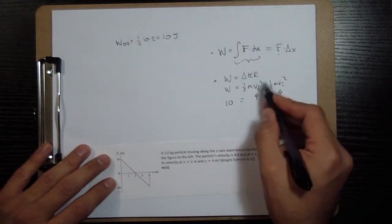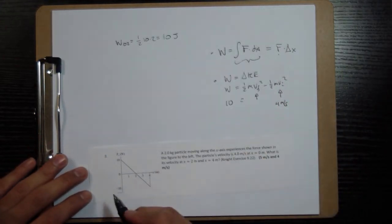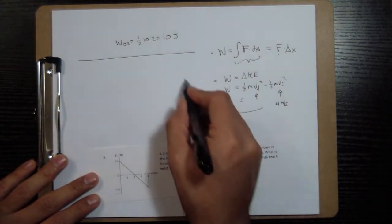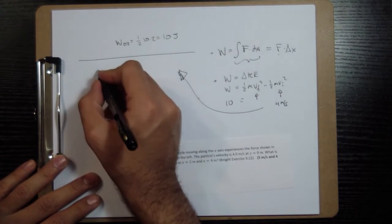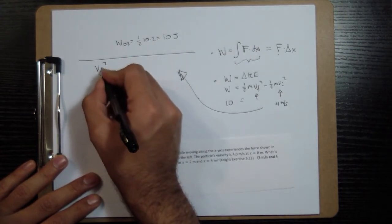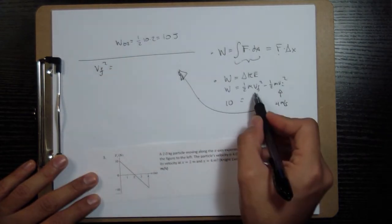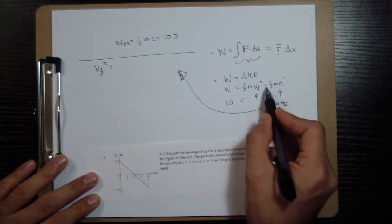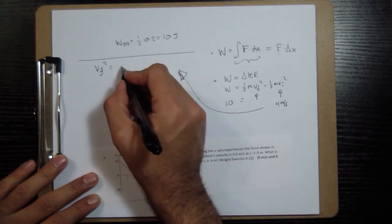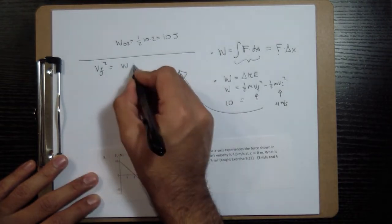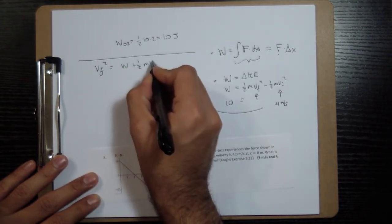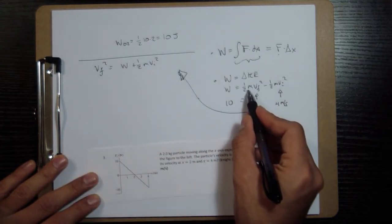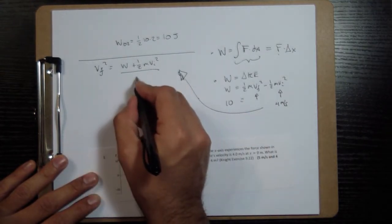So then what we'll do is isolate v final. I'm going to write this over here. V final squared I'm going to move this to the other side so it's going to be work plus 1 half m v initial squared and then I would have to multiply by 2 and divide by m.